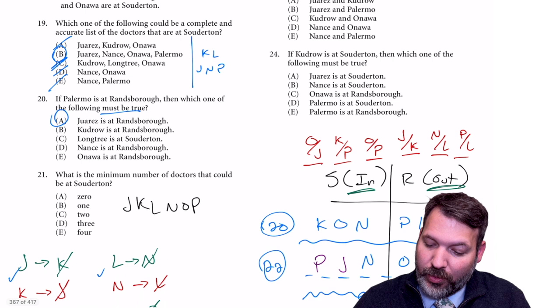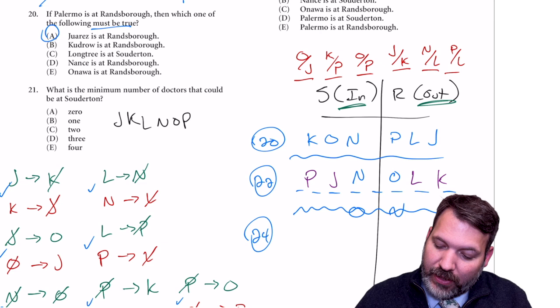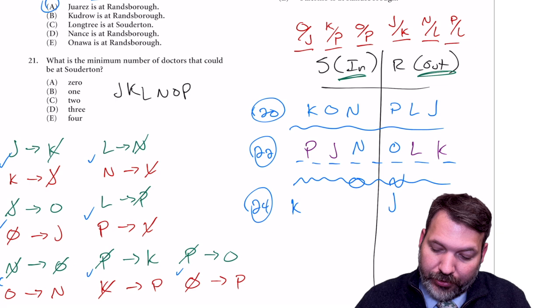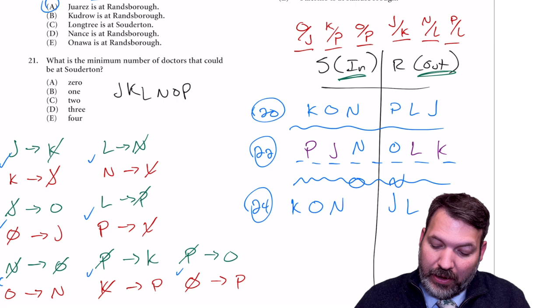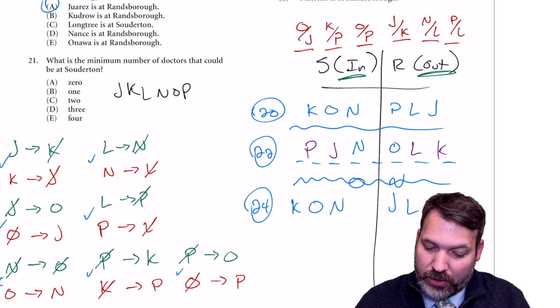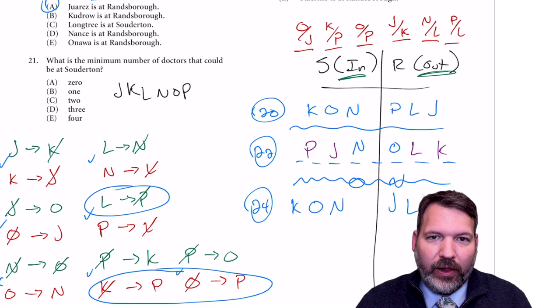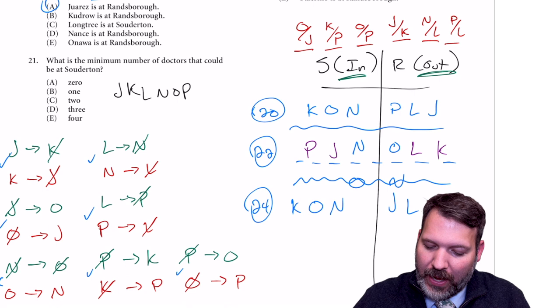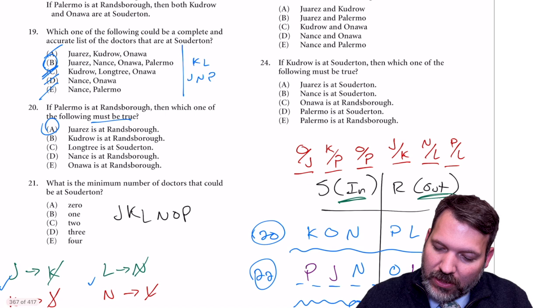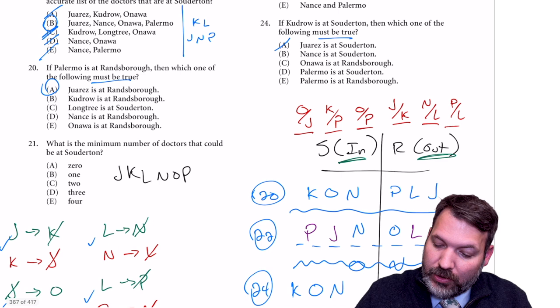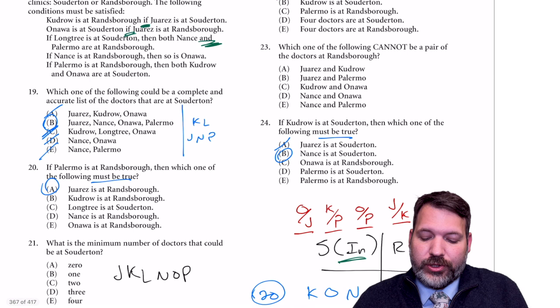Question 24: if K is in, which must be true? K in → J out (clue 1); J out → O in (clue 2); O in → N in (clue 4); N in → L out. We haven't placed P — I don't see any clue that forces P to a specific side here, so P could go either way. It's a must-be-true question, so the answer isn't about P. J inside? No. N inside? Yes. Answer 24 is B.